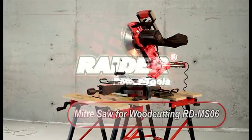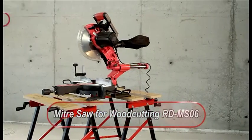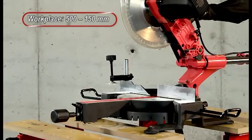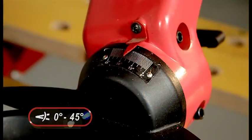Raider Power Tools presents Miter saw for wood cutting RD-MS06. Workplace 500 by 150 millimeters. Vertical tilt head from 0 to 45 degrees.